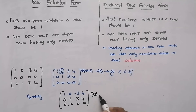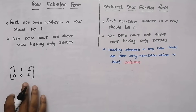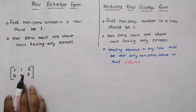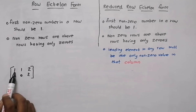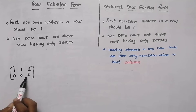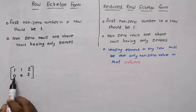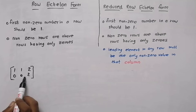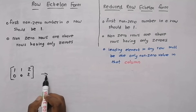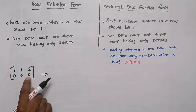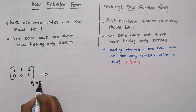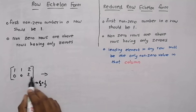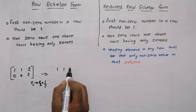Now check this new matrix. We are going to convert it into echelon form and reduced row echelon form. The first condition is that the first non-zero number in a row should be 1. In the second row, the first non-zero value is 2, not 1. So we must convert this 2 into 1 by multiplying R2 by one-half, so 2 × (1/2) = 1. Our row echelon form will then be: row 1 is 1, 1, 2 and row 2 is 0, 0, 1.